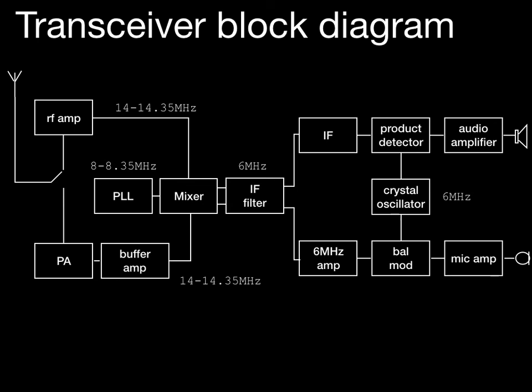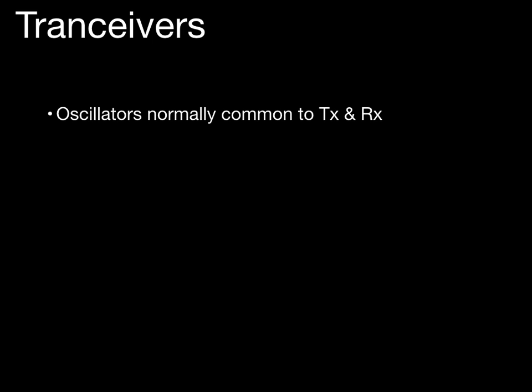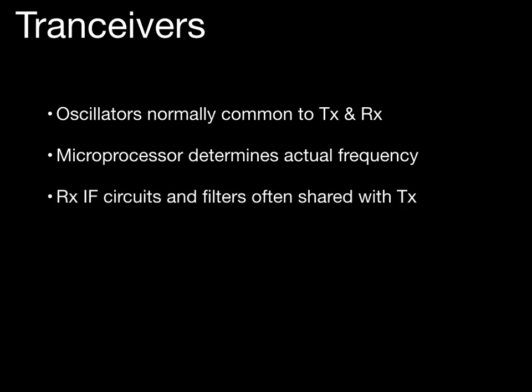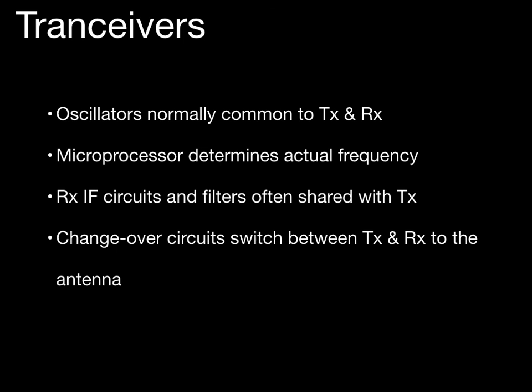Finally, let's look at transceivers. The transceiver block diagram from the book Advance shows shared circuitry between the transmitter and receiver that is switched over as you move from transmit to receive. Oscillators are normally common to both transmitter and receiver; the microprocessor determines the actual frequencies. Receiver intermediate frequency circuits and filters are often shared with the transmitter, and changeover circuits switch between transmit and receive to the antenna.